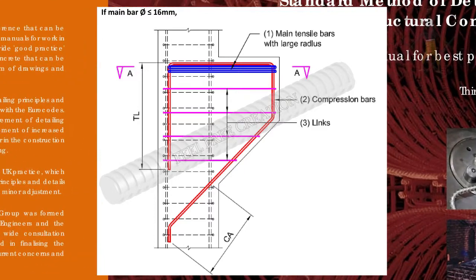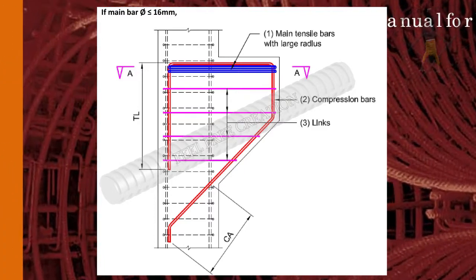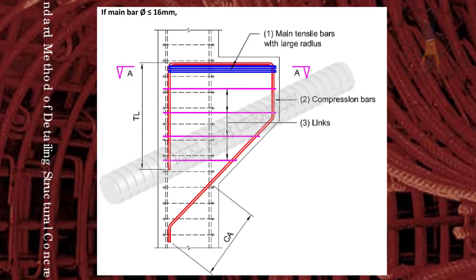Corbel bar arrangement. Corbels occur in columns to support the elements, hence they are considered as compression members.